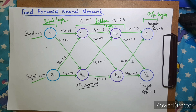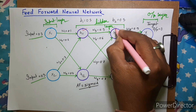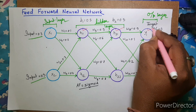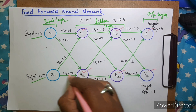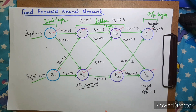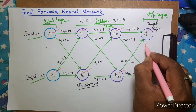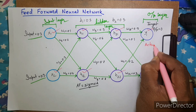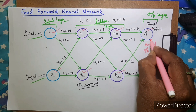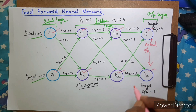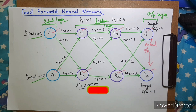First we will check how the calculation works for each neuron, then it will be easy for you to understand how we are going to calculate the actual output for both y1 and y2.